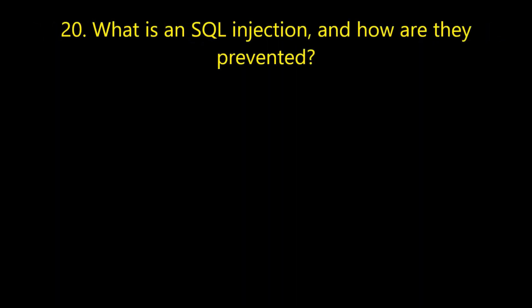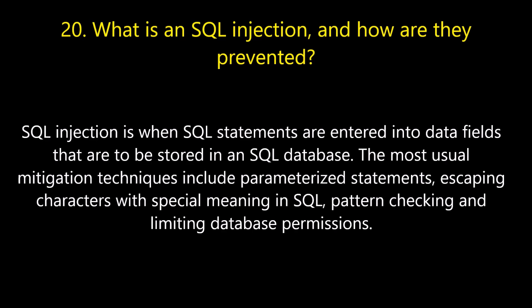Question number twenty: what is an SQL injection and how are they prevented? SQL injection is when SQL statements are entered into data fields that are to be stored in an SQL database. The most usual mitigation techniques include parameterizing statements, escaping characters with special meaning in SQL, pattern checking, and limiting database permissions.